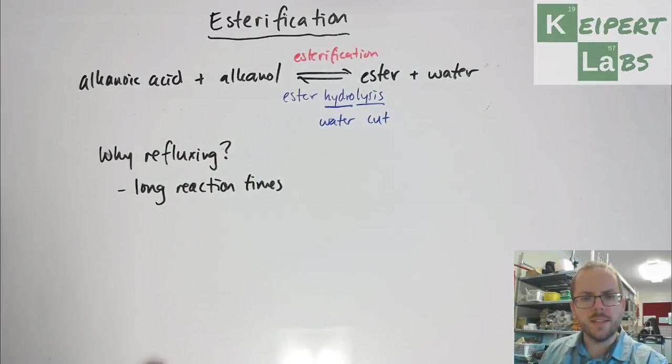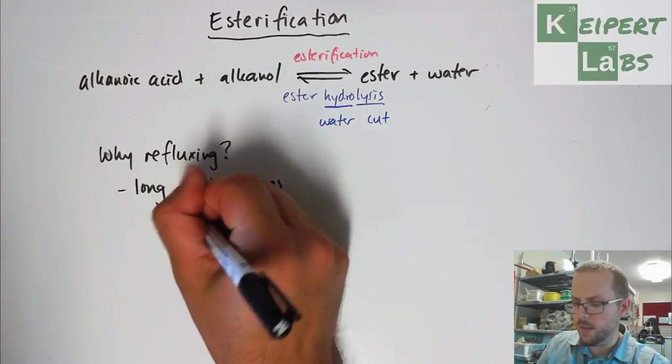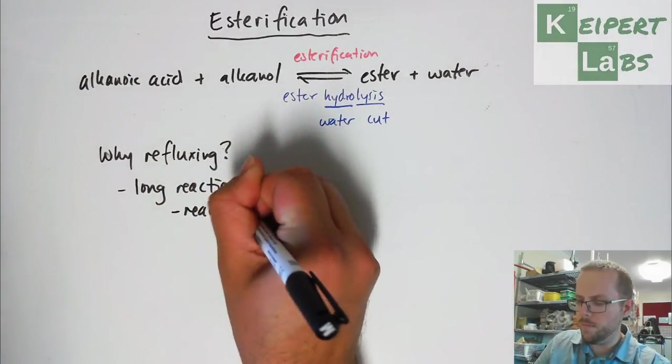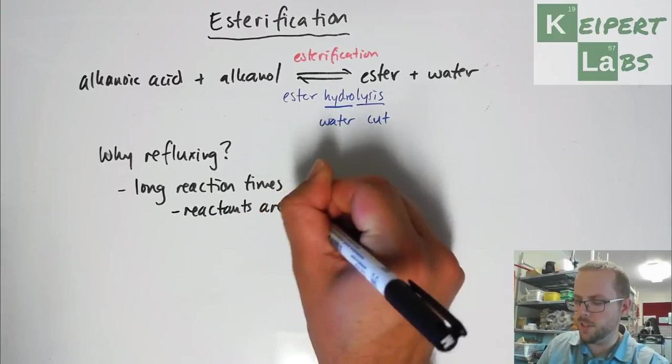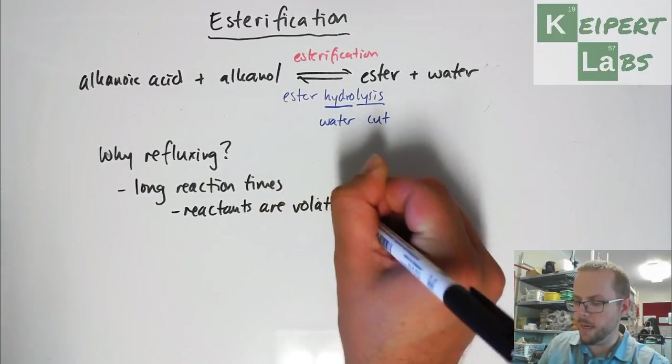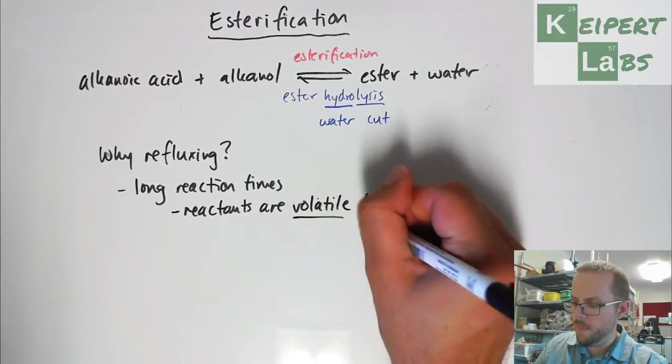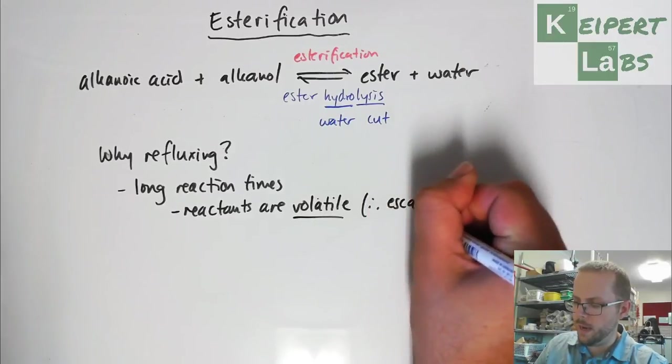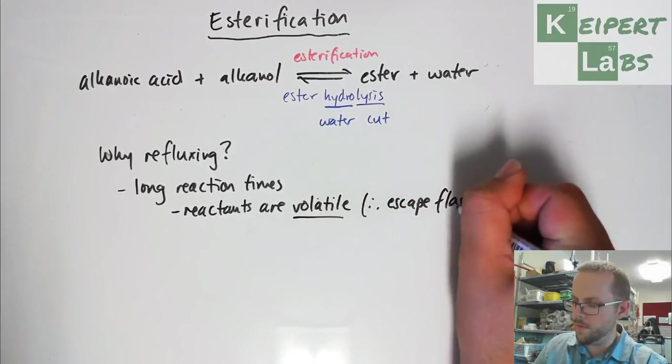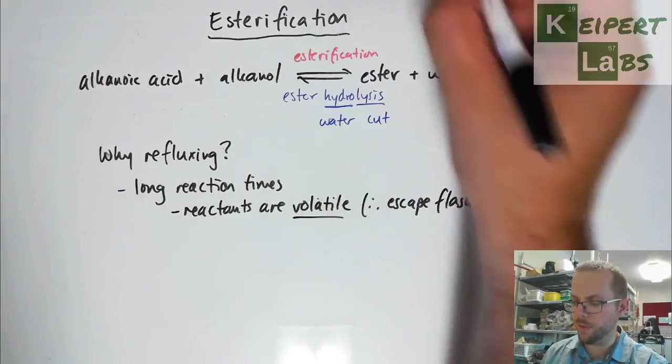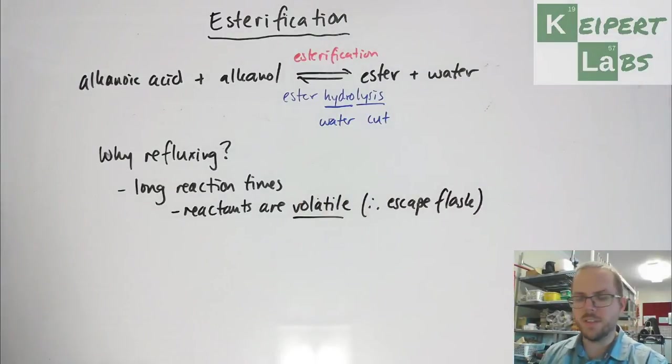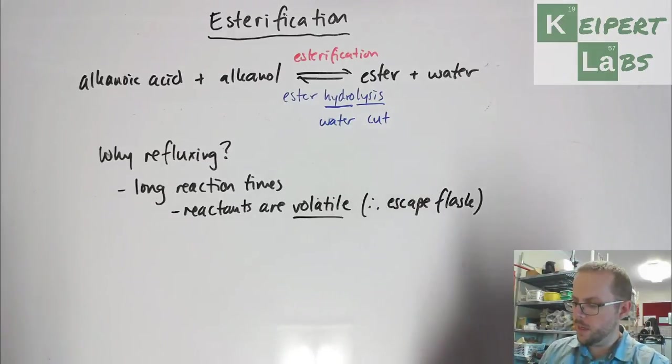And so what that means is that reactants will evaporate. So the reactants we say are volatile, that is, will evaporate easily, so they will escape the flask very easily, because, especially because we're having to heat up the reaction, and so we don't want our reactants to escape the flask before any reaction has been able to happen.